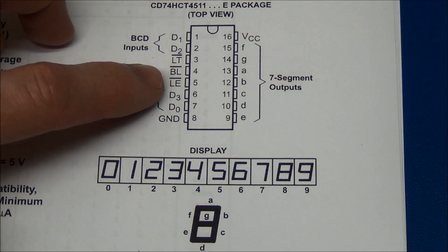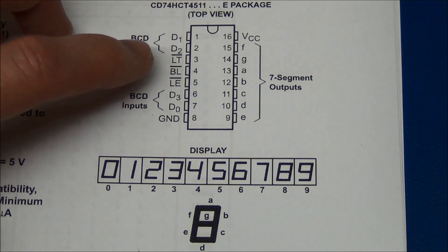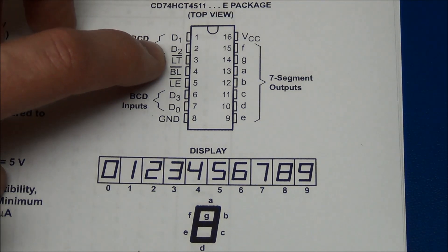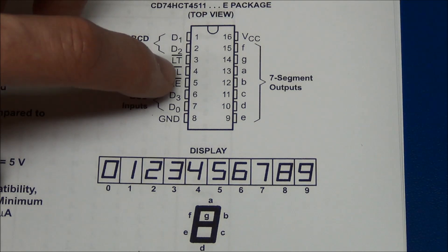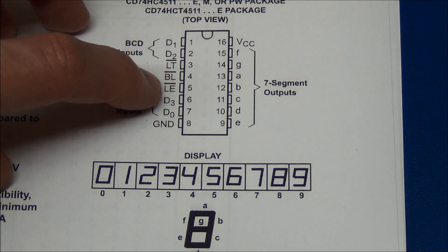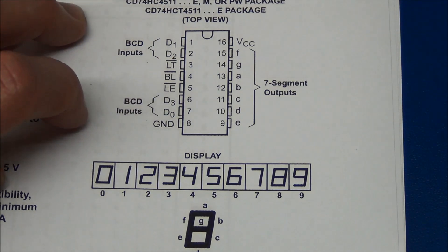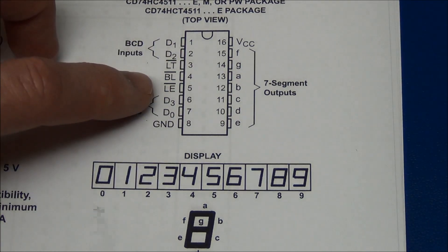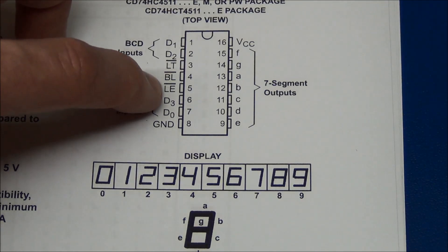And these are all active low, meaning that if you don't want it, you have to pull it high. So if you don't want it to light up all the outputs, that should be high. If you don't want it to blank, that should be high. And if you don't want it to update the outputs, that should also be high. But most of the time you would keep this one low.